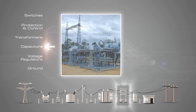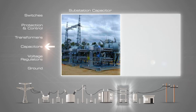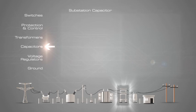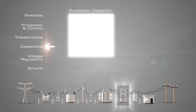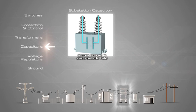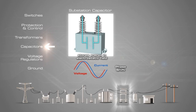Capacitors have many uses in electronic circuits such as DC blocking, filtering, and RC time constants. Their primary use in electric power transmission systems is for power factor correction. Capacitors are a passive two-terminal device that store energy in the form of an electrostatic field.